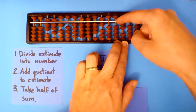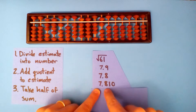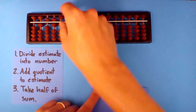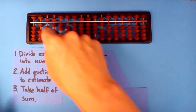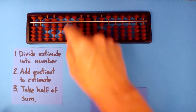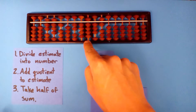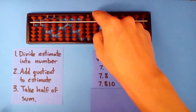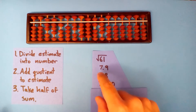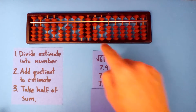So I'm going to zero everything else off and take this as my quotient. Now we add our estimate to the quotient: 7.81. And take half of this. Half of 1 is 0, half of 15 is 7, half of 16 is 8, half of 2 is 1, half of 4 is 2, half of 9 is 4, half of 19 is 9, half of 13 is 6, half of 16 is 8. So our estimate is 7.81024968.